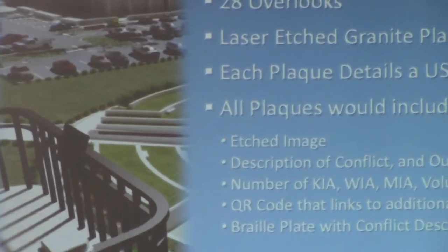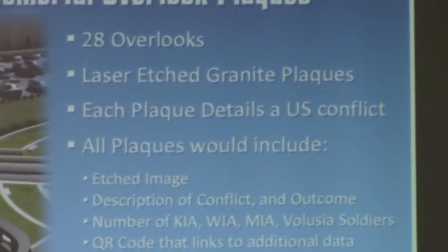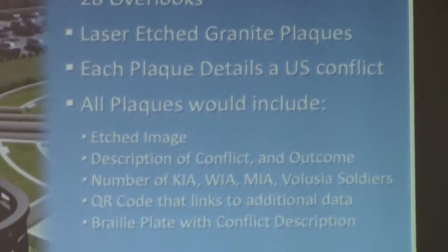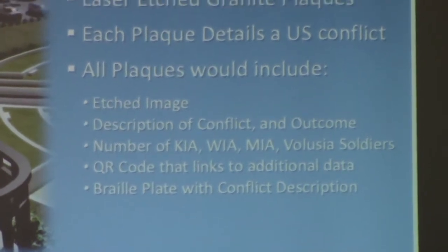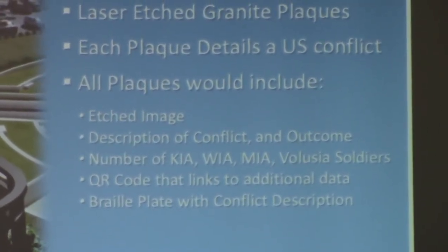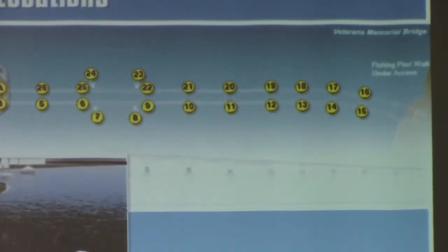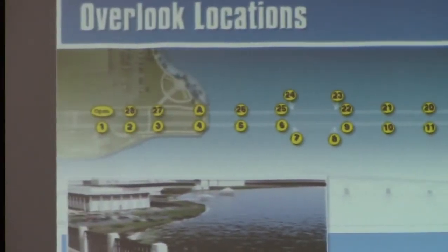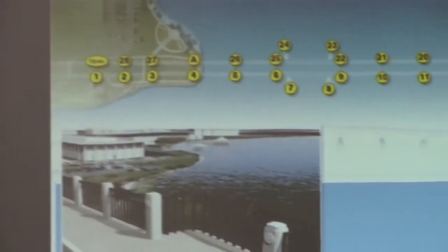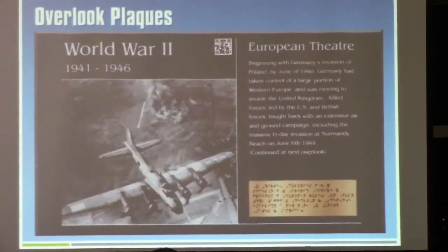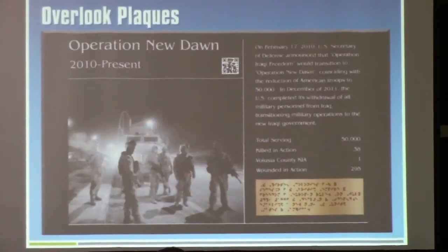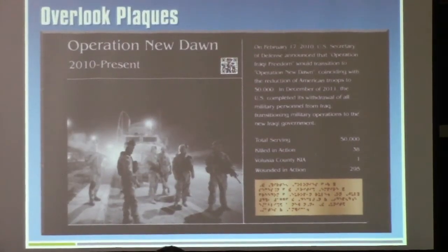Each plaque includes the KIA, WIA, MIA numbers specific to Volusia County, as well as a description of the conflict. There's a QR code that links to additional data on a website for more information on that conflict, and of course the royal plate that Kat mentioned, which also details the conflict. Here are some of the locations of those overlooks and how they cross the bridge and end up back at the park. The idea is that you cross down the bridge, use the underpass, and then come back the other way to complete the circuit. Here are a couple of images of the plaques — the same as those behind you — showing imagery combined with a brief description and numbers.